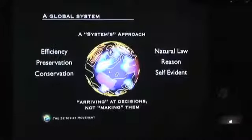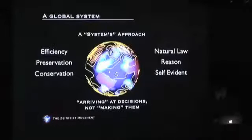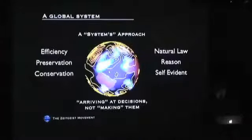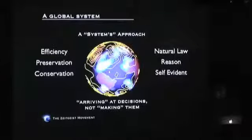When using a systems approach, we are arriving at decisions as opposed to making them. Making a decision is a subjective act, often based on incomplete information or affected by one's cultural bias. Our goal is to remove the basis of one's opinion as best we can by using the most up-to-date knowledge we have to align with natural processes to the best of our abilities at a given time. This is an emergent process because the body of knowledge of human understanding changes over time as new discoveries are made. There is no final frontier.